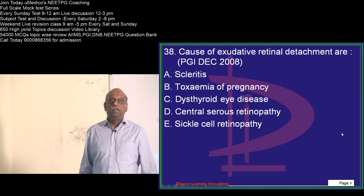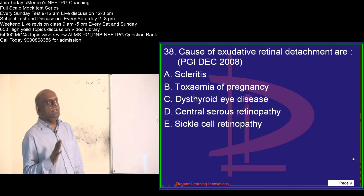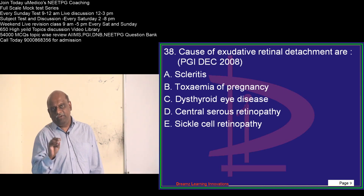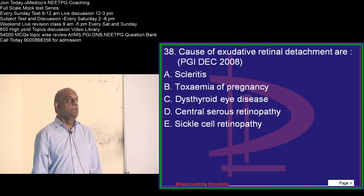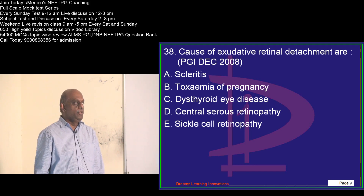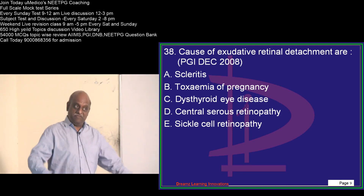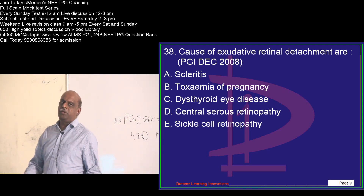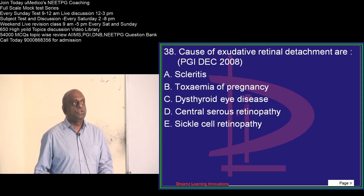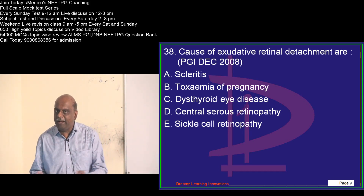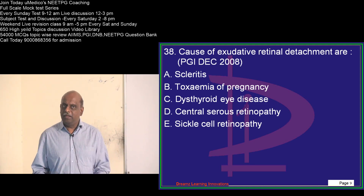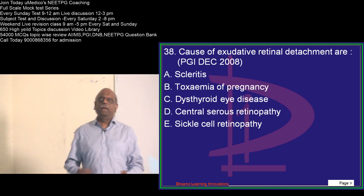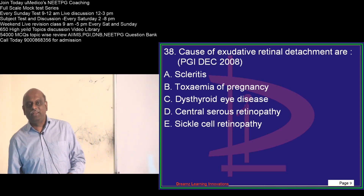To get a seat in NEET-PG, solve the last 15 years of AIIMS, All India, PGI, DNB, and JIPMER question banks — five banks of about 5,000 questions each. By the time you solve 25,000 questions, you know what the examiner wants. Don't just read theory first; keep solving questions, identify what you remember and forget, and bookmark them. On the Umedico app, video discussions of the question banks are available, topic-wise analyzed for DNB, JIPMER, AIIMS, and All India — last 15 years.